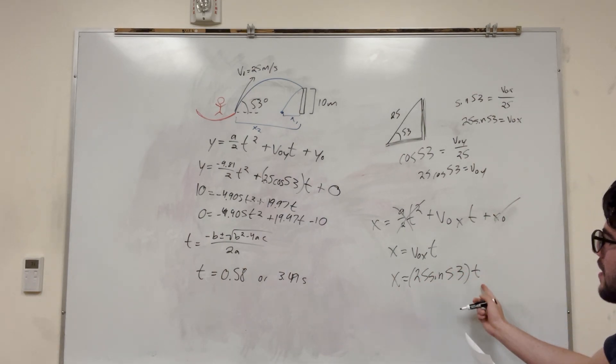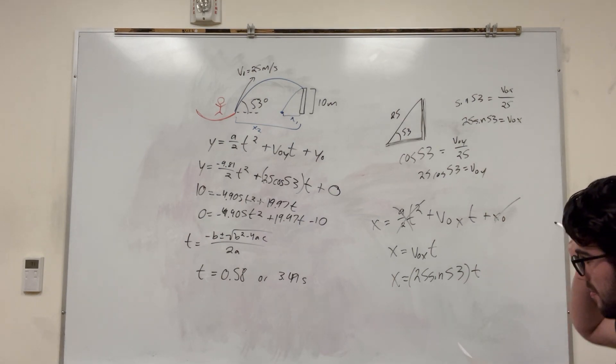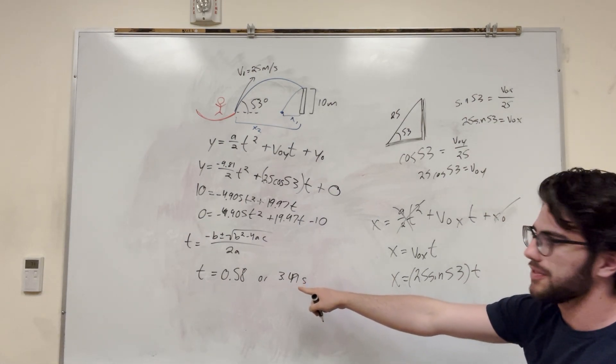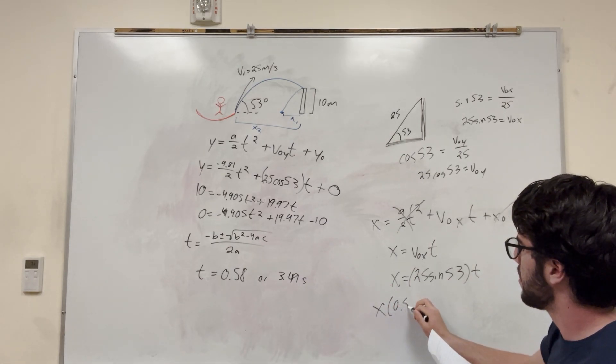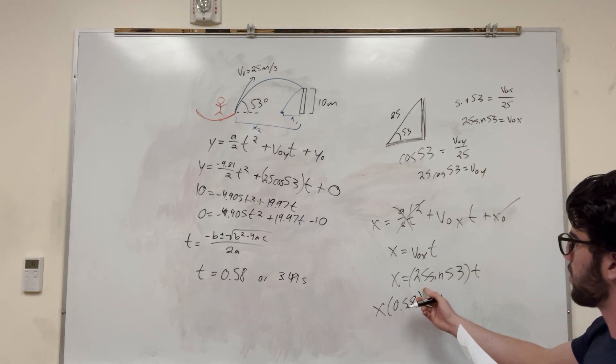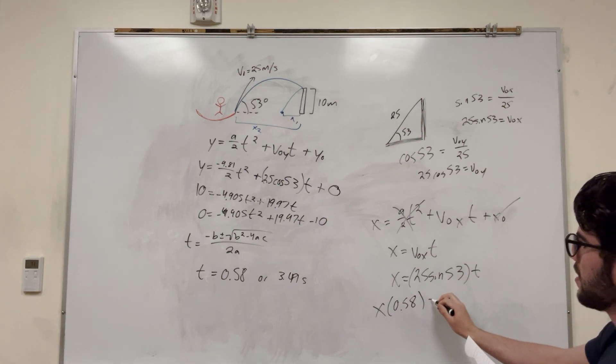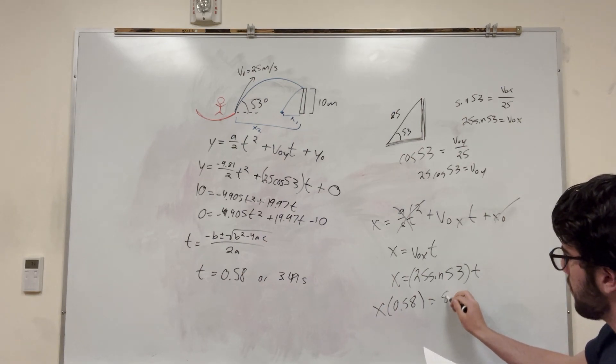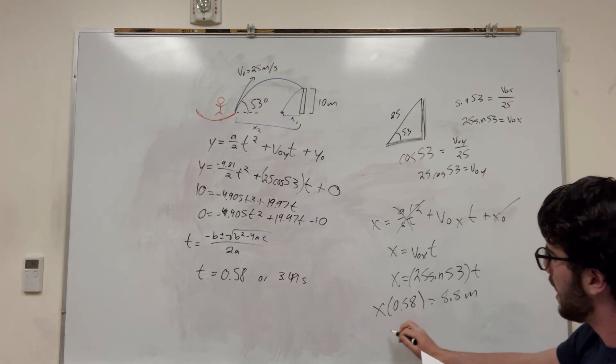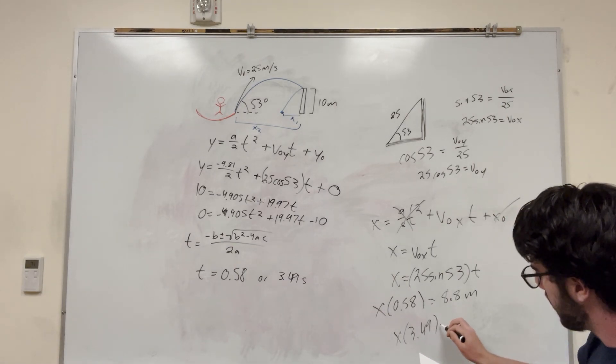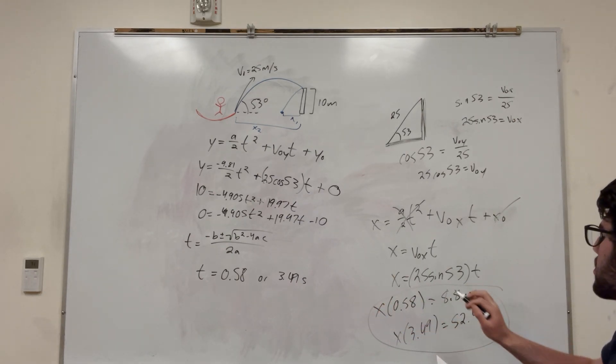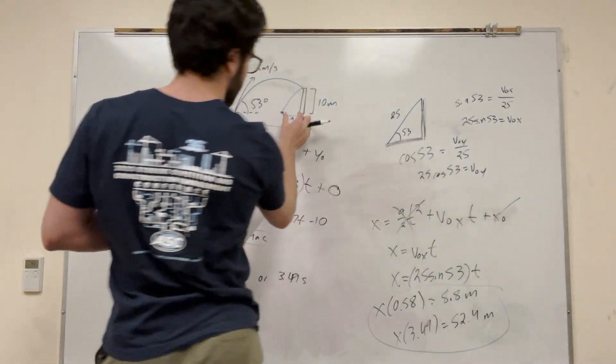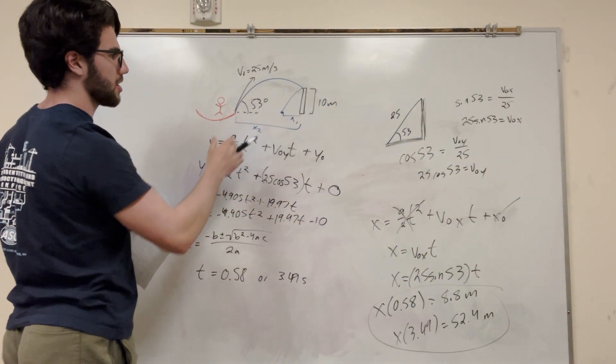So, x then becomes 25 sine of 53 times time. And we're trying to find for x, and we have this value of t here. So basically, all you have to do now is you have to plug in these two values of t for this equation here. So if you plug in 0.58 into t for this equation, 25 times sine of 53 times time, which is 0.58, for this case, you're going to get 8.8 meters. And if you do it for 3.49, you're going to get that it is 52.4 meters. Those are your two possible numbers on this equation.